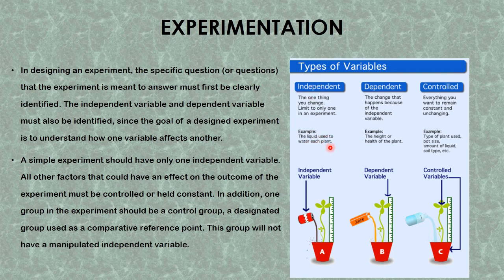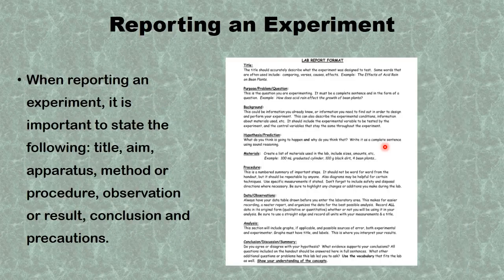The dependent variable describes the change that happens because of the independent variable. In this case, the dependent variable is the height of the plant — the outcome we want to determine from manipulating the independent variable. The controlled variables are everything kept constant and unchanging: the type of plants used, pot size, amount of liquid, soil type, and sunshine. The independent variable will determine which liquid helps the plants grow properly, indicated by the greatest height.